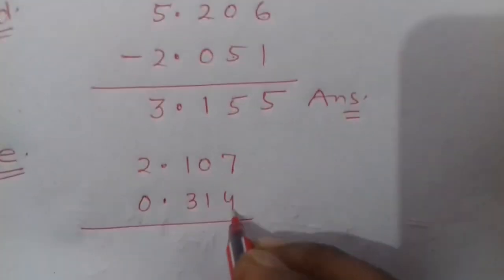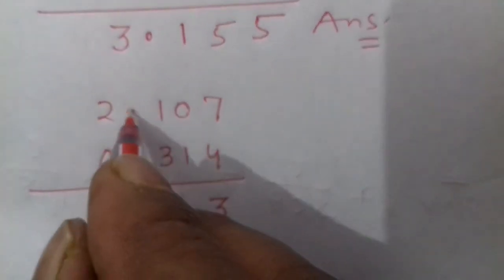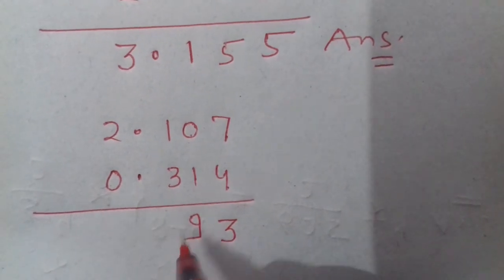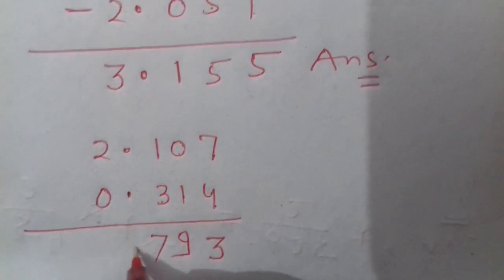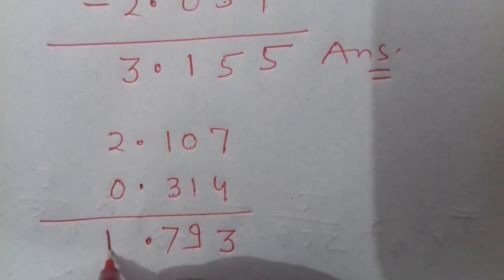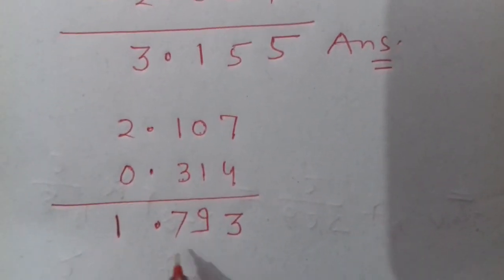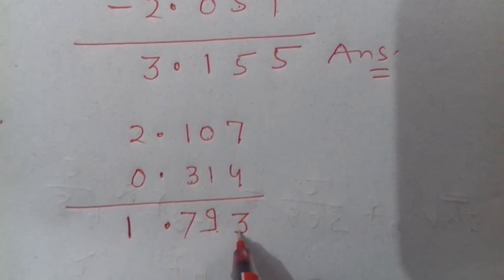So 7 mein se 4 minus karhenge. Here is 3. Ye 10 mein se 1 minus ho ga 9. Aur yahaan se bacha 10 mein se ye minus ho ga 7. And we get here 1.793 kg.